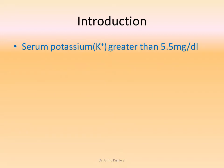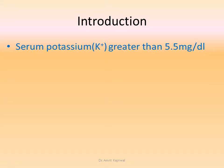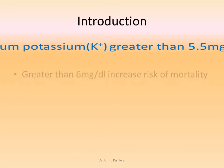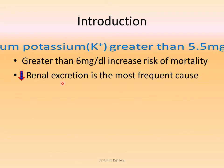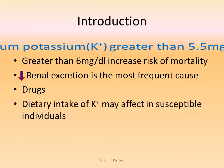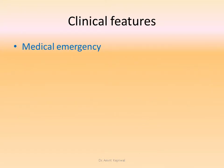Serum potassium greater than 5.5 mEq per liter is said to be hyperkalemia. Greater than 6 mEq per liter increases the risk of mortality. Decrease in renal excretion is the most frequent cause. Drugs are implicated and dietary intake of potassium may affect susceptible individuals.